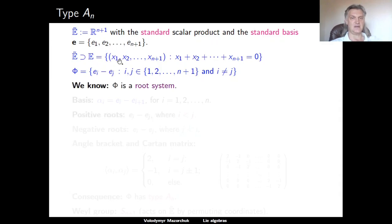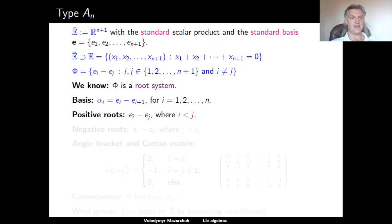We have already seen that this is a root system. The root system consists of all differences of different basis vectors, which clearly belong to the subspace. As a basis of this root system, we can take the vectors E_i minus E_{i+1}, where i runs from one up to n. The positive roots will be differences E_i minus E_j where i < j, and the negative roots will be differences E_i minus E_j where j < i.